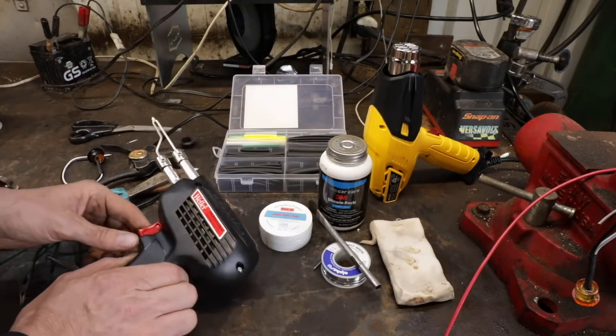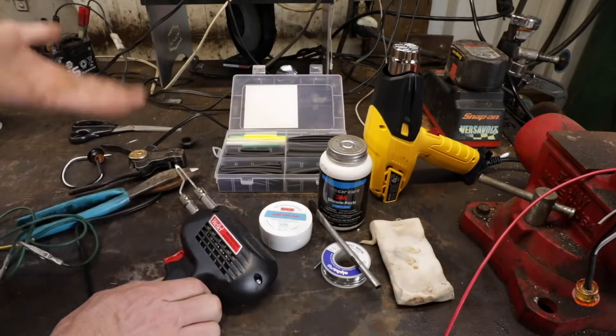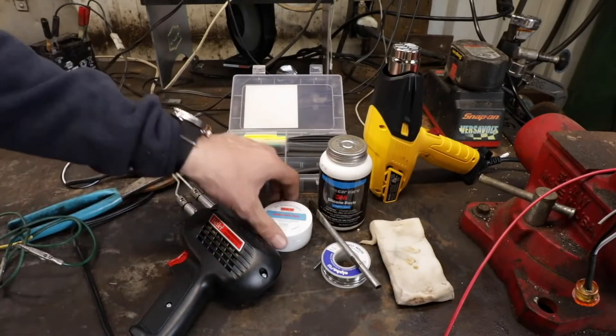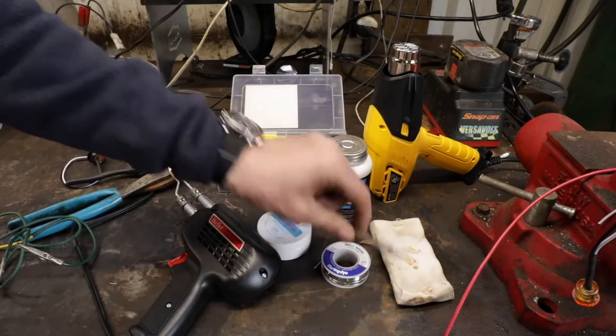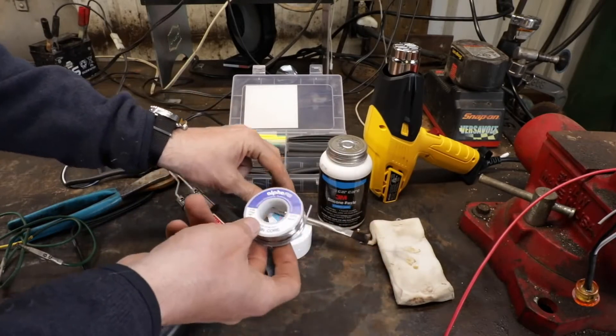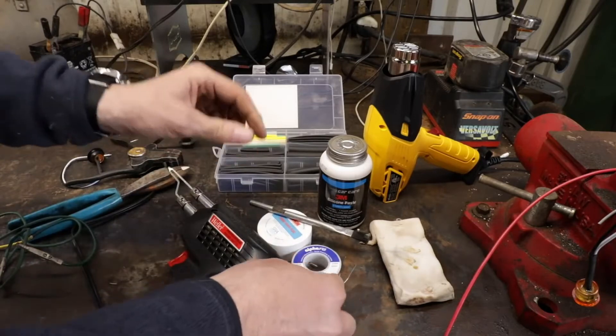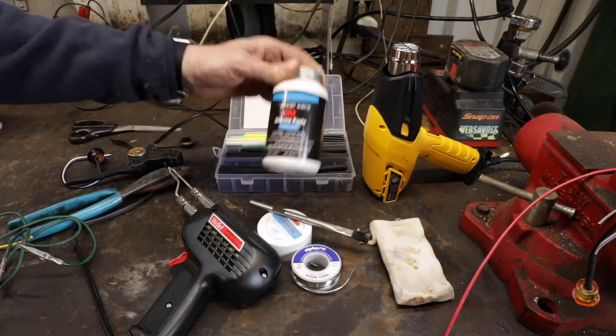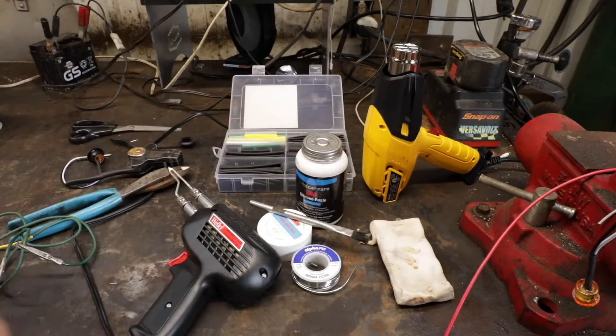Get yourself a soldering gun. These Wellers are good, they're probably in the thirty to forty dollar range. You want some rosin paste flux, a little brush, and some rosin core solder. You don't want to use the solder used for plumbing. This 3M silicone dielectric grease is amazing, as well as a good selection of shrink tubing.